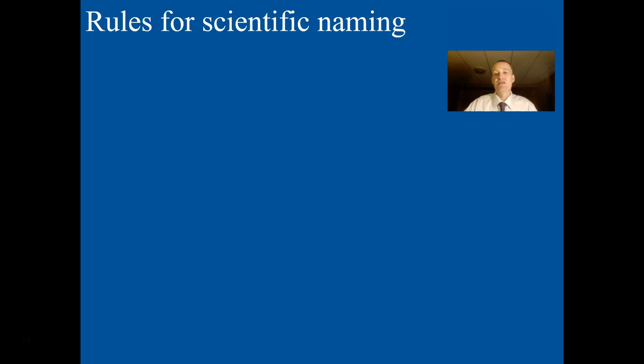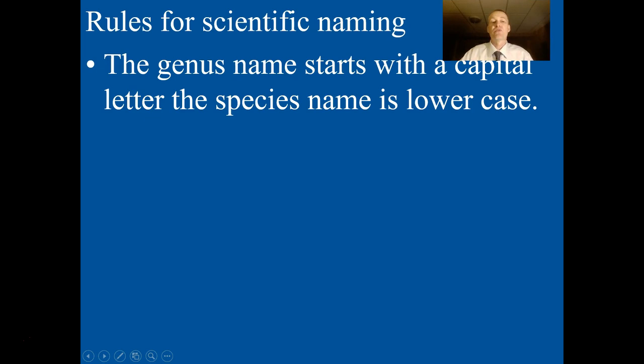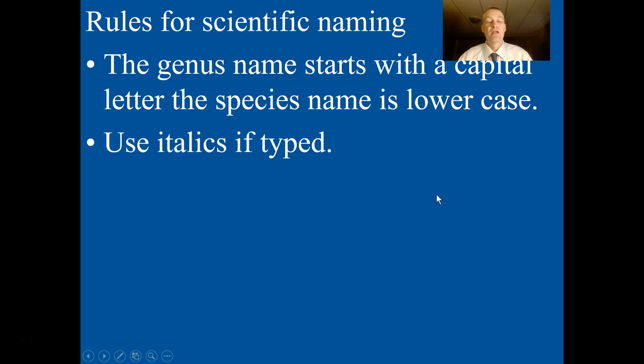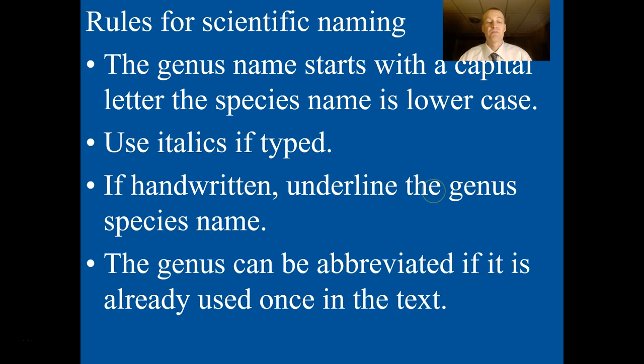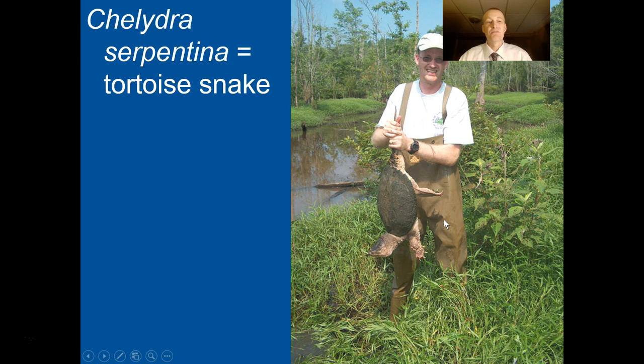There are rules for scientific naming that I want you to know. The genus name always starts with a capital letter; the species name is lowercase. You always use italics for the scientific name if it's typed. If you handwrite a scientific name, you underline the genus and the species name. The genus can be abbreviated if it's already been used once in a text — in a scientific paper they'll show the full name once and then abbreviate it every other time, just to be concise.